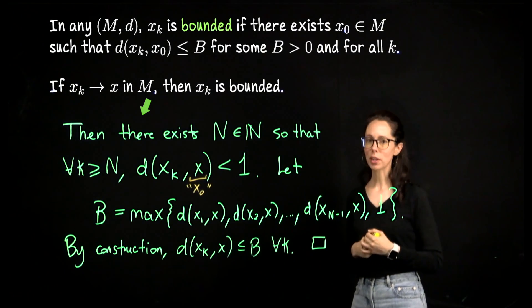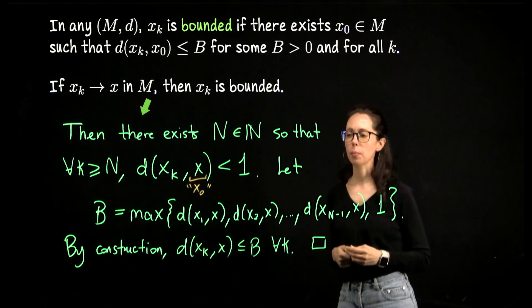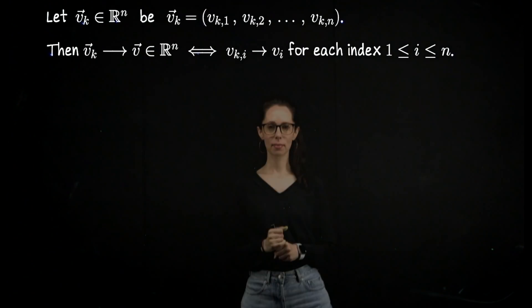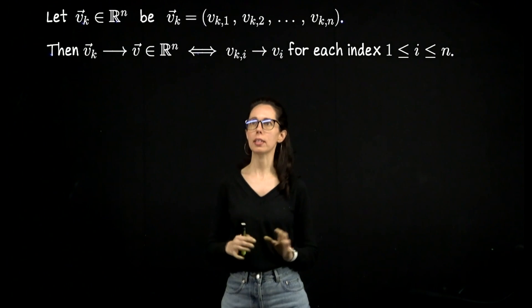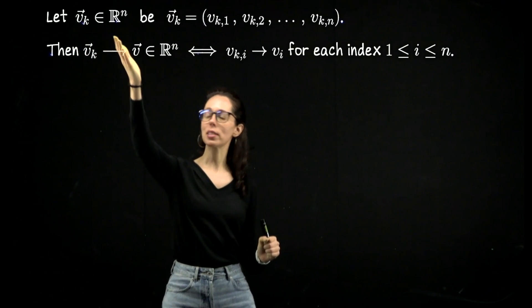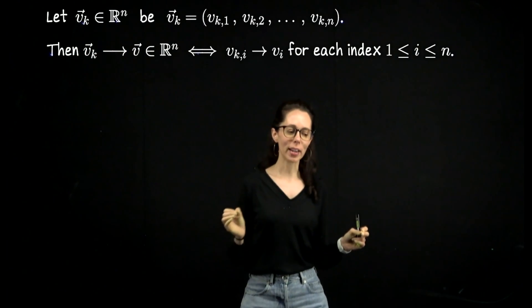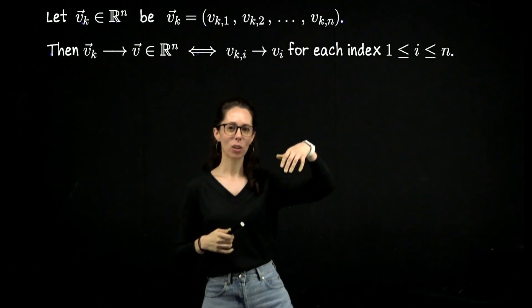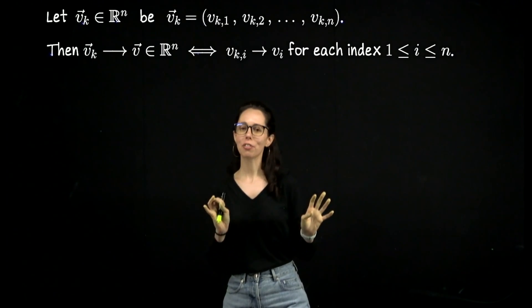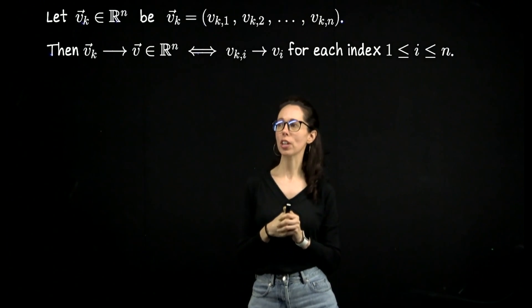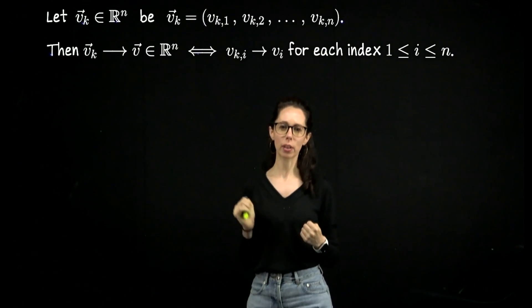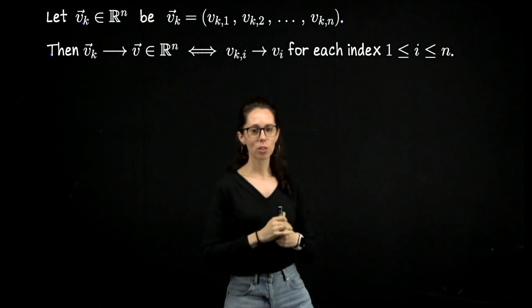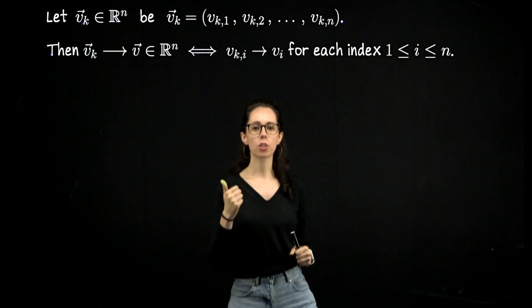Everything so far was in a general metric space. I'd like to take a moment to talk about sequences in Rⁿ. When you have a sequence in Rⁿ, you can think of it as a sequence of vectors. Be careful writing these down because there are a lot of indices: n is the dimension, k indexes the terms in the sequence, and you also have coordinates. This result is extremely easy to believe: sequences of vectors converge in Rⁿ if and only if their individual coordinates converge. So for a sequence in R³, you need the x, y, and z coordinates each to converge separately.